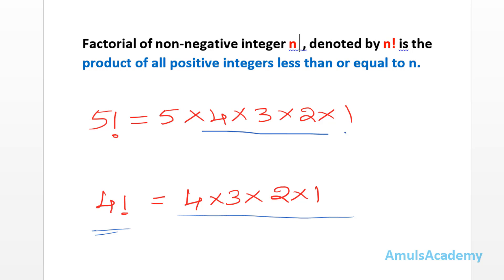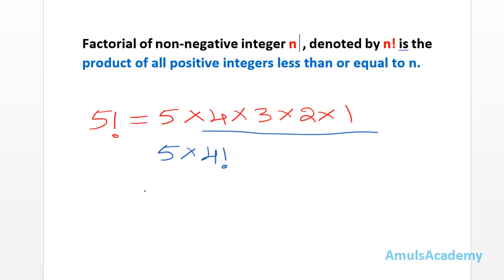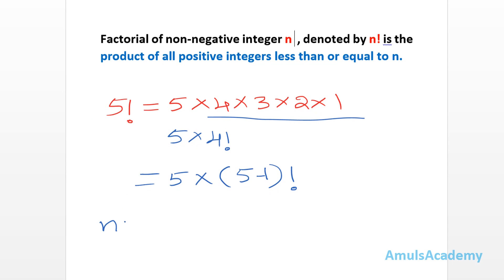Instead of writing 4 × 3 × 2 × 1 we can write 5 × 4!, because 4 × 3 × 2 × 1 is nothing but 4!. Or we can write this as 5 × (5-1)!. In general, we can write n! = n × (n-1)!.